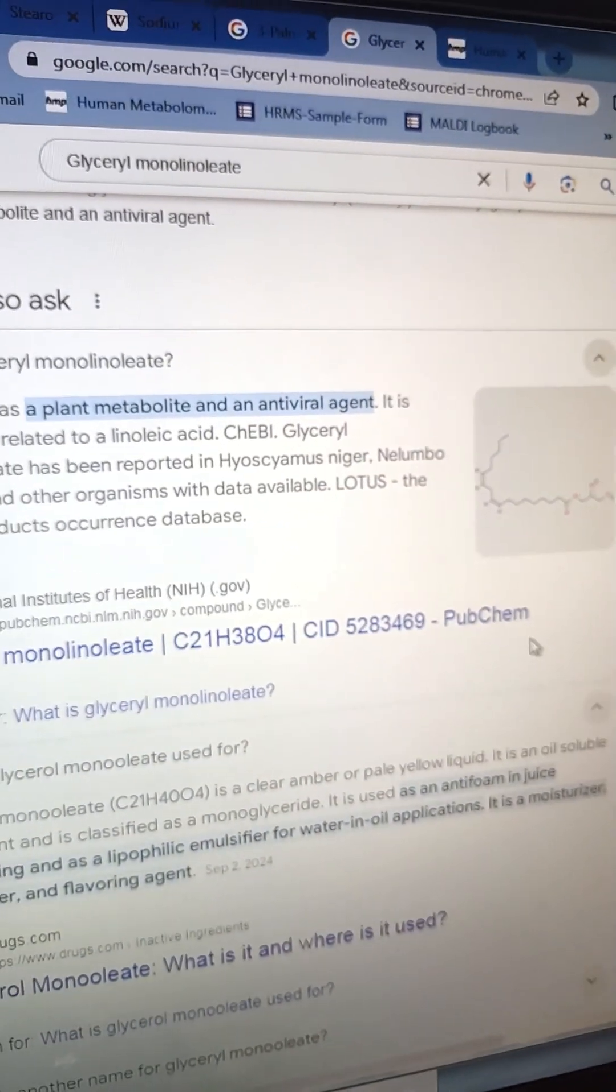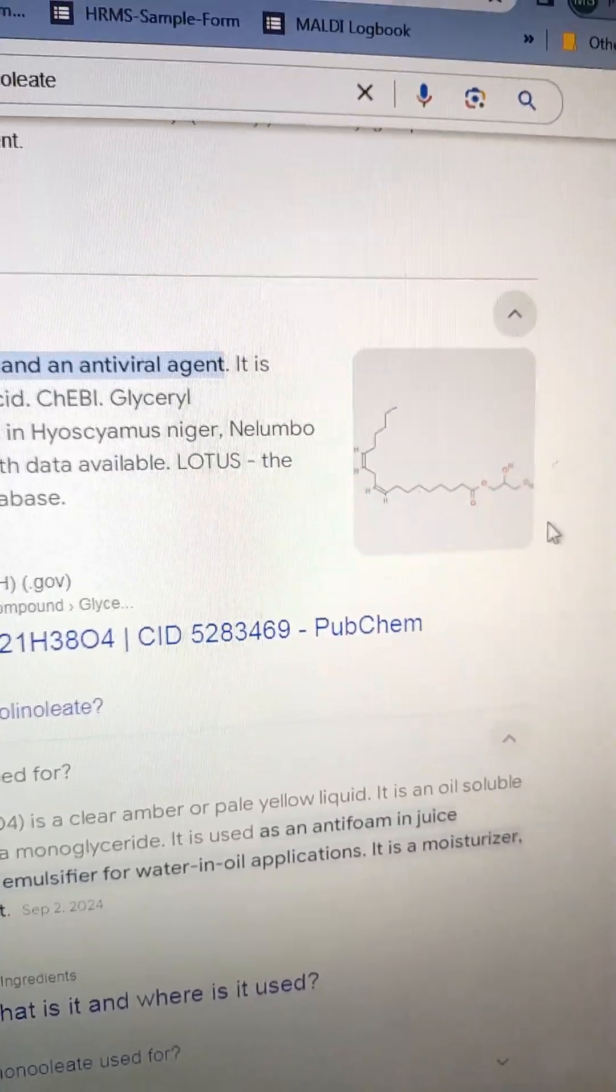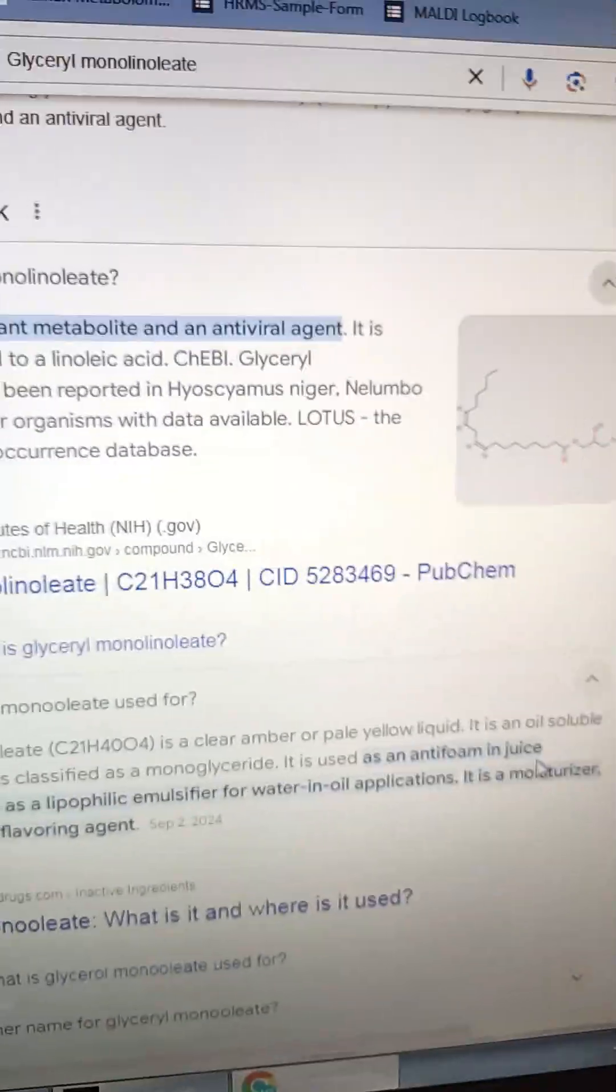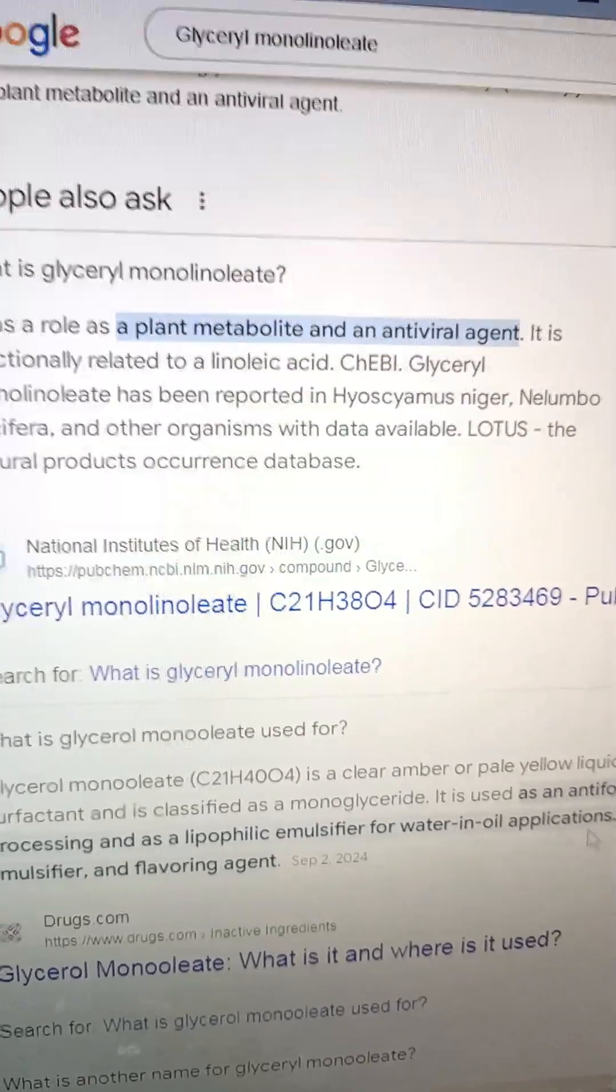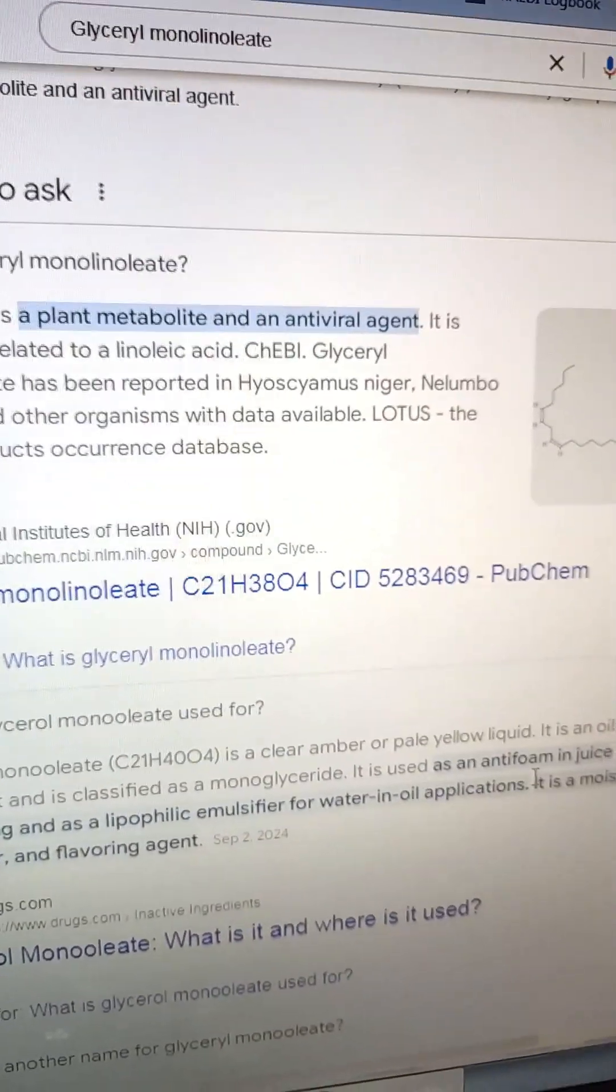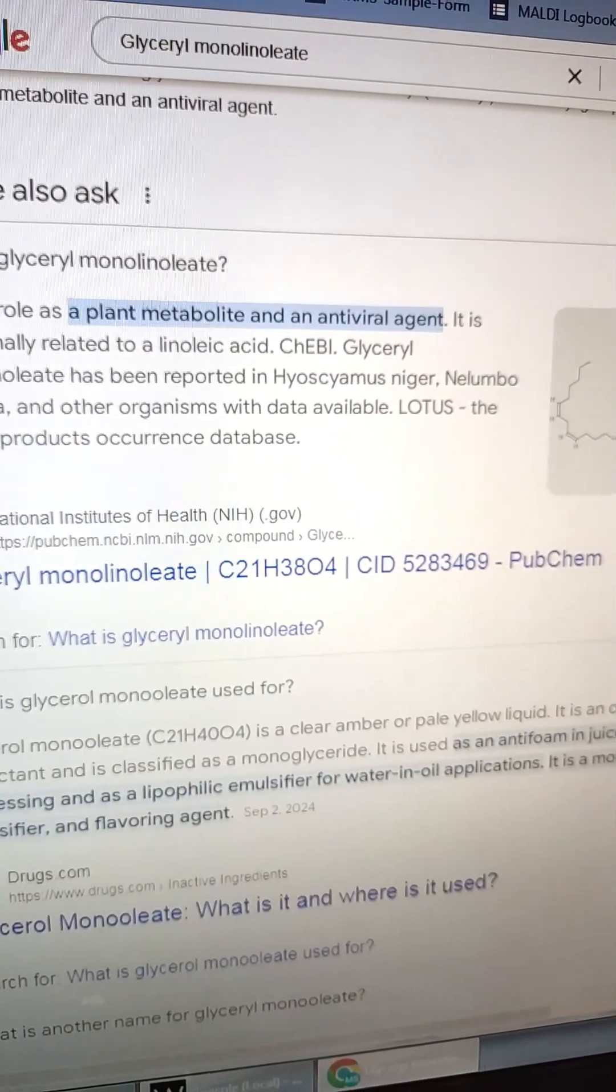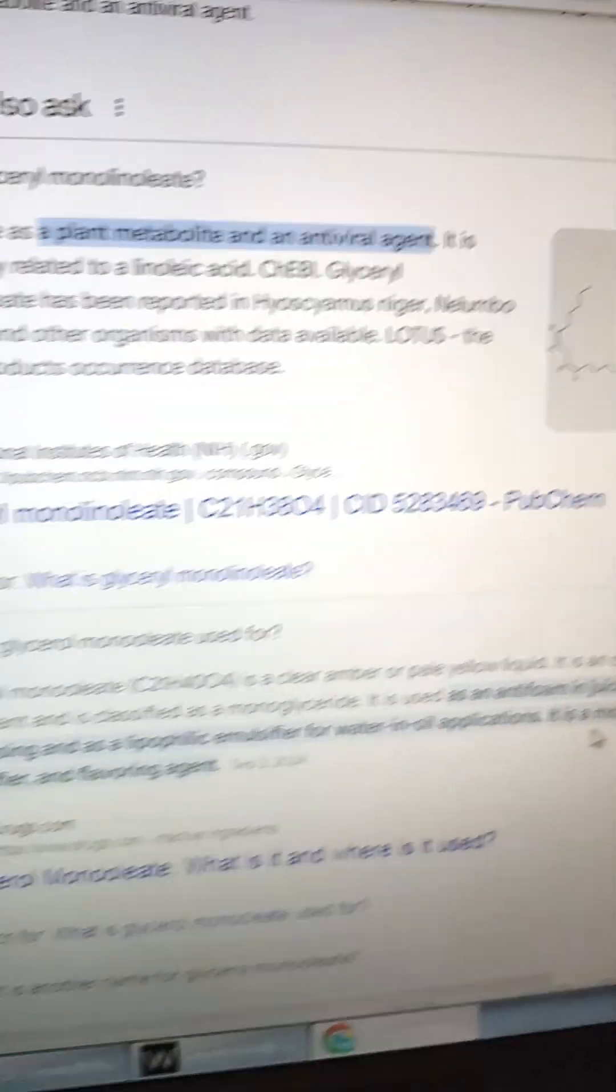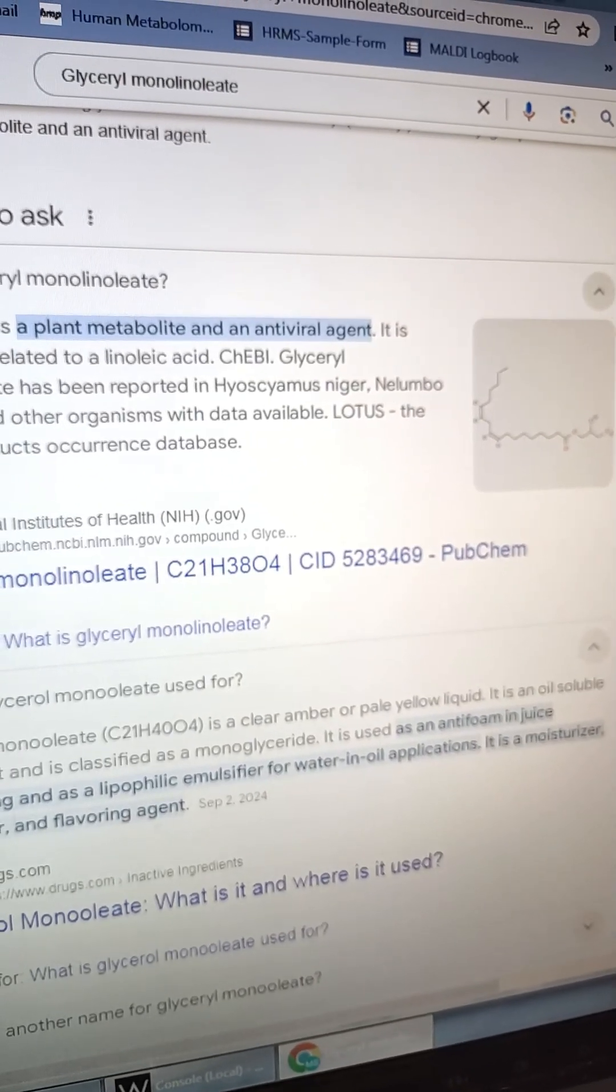So the first thing we're finding in here is the 355. That is going to be linoleic acid with a glycerol on it. So glycerol monolinoleate. It's basically just linoleic acid with a glycerol still attached to it. Or potentially they're making it exogenously as an oil and water emollient and flavoring agent. So it is a moisturizer, emulsifier, and flavoring agent. That's the first unique thing we're finding.